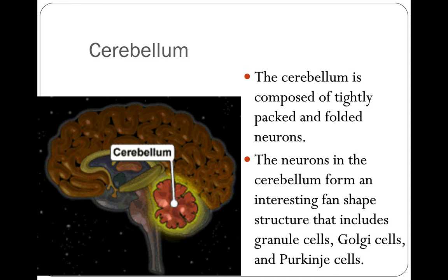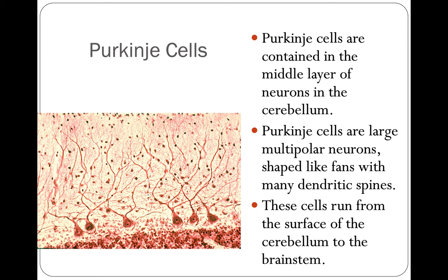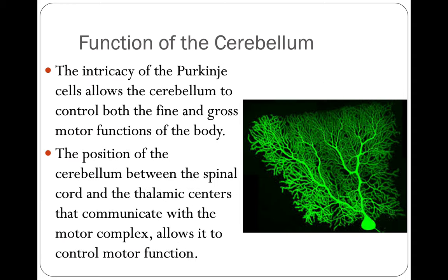The cerebellum is composed of tightly packed and folded neurons that form an interesting fan-shaped structure including granule cells, Golgi cells, and Purkinje cells. Purkinje cells are named after their discoverer and are contained in the middle layer of the neurons in the cerebellum. They are large multipolar neurons shaped like fans with many dendritic spines, running from the surface of the cerebellum to the brain stem. The intricacy of the Purkinje cells allows the cerebellum to control both the fine and gross motor functions of the body.